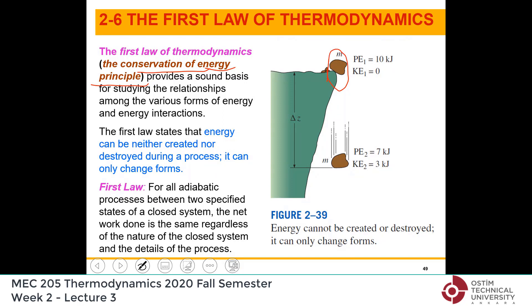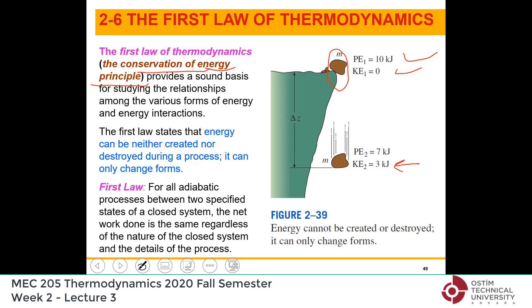To give an example: let's say we have a rock with mass m where potential energy is 10 kilojoules and it is stationary, so kinetic energy is zero. If you push this rock, its velocity and kinetic energy will increase from zero. The First Law says: if kinetic energy — one form of energy — is increasing, another form of energy must be decreasing. Here, the elevation decreases, so potential energy decreases.